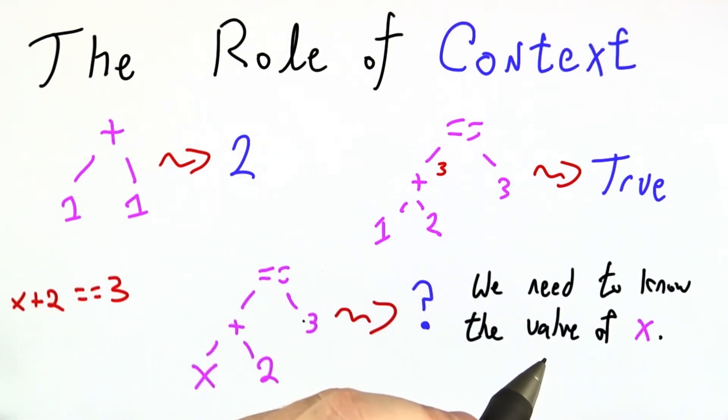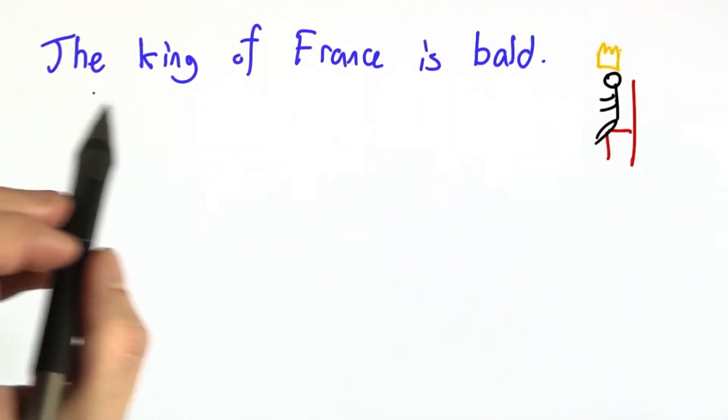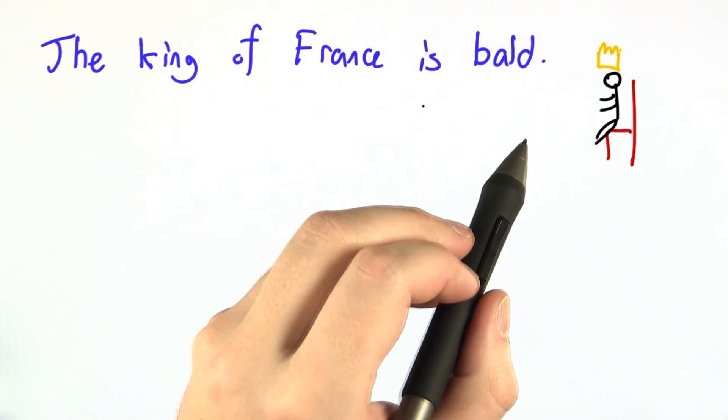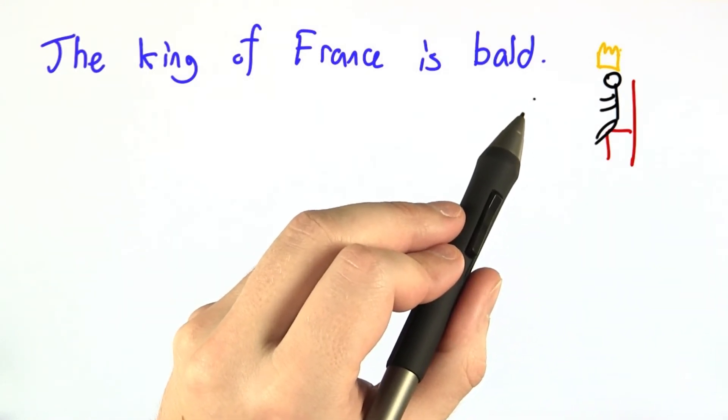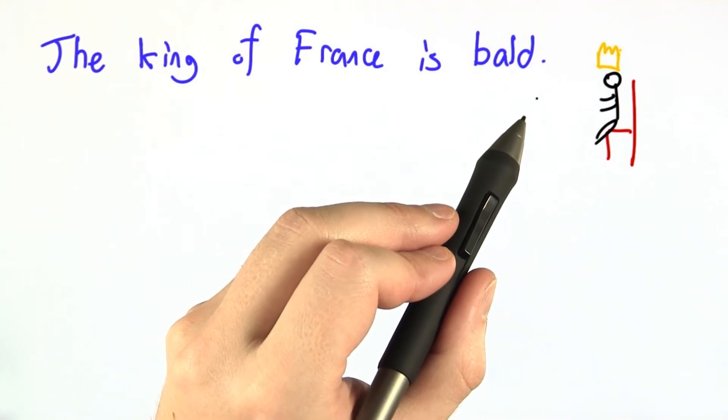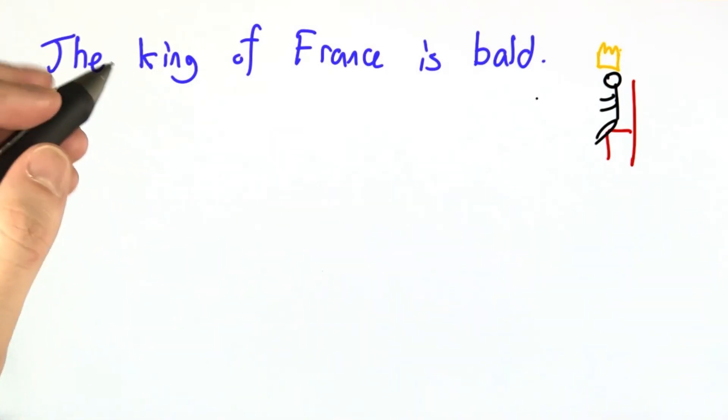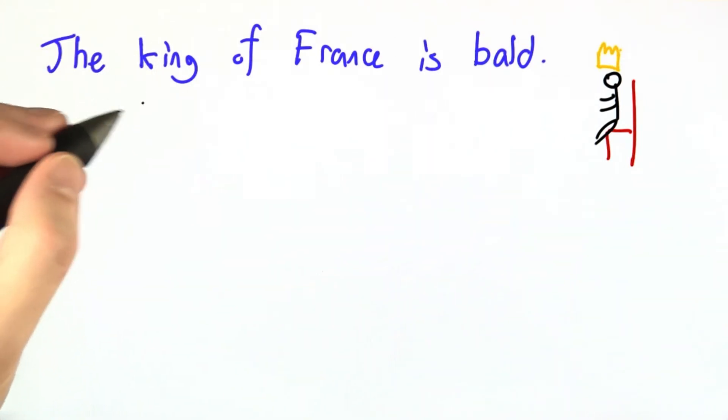In fact, we need to know the current value of x because a lot of variables change. We can see the same sort of thing in natural language. Here I've written out a sentence, the king of France is bald, that is syntactically entirely valid. And we can imagine trying to figure out if this sentence is true or false.